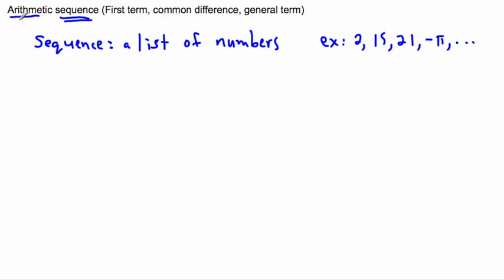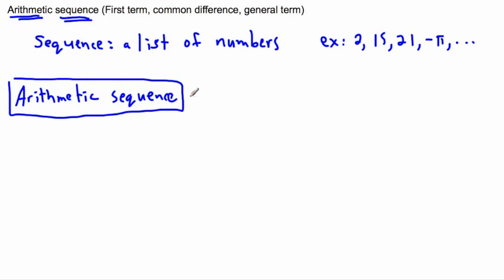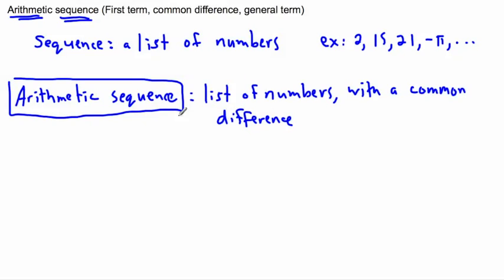Now what does it mean to be arithmetic? Well that's the key thing here. So an arithmetic sequence is a special kind of sequence. So an arithmetic sequence, what does that mean? Well it's a list of numbers because it's a sequence but there's something very special about it. So we're going to say that they have something in common. They have a common difference. So this is the key thing here with an arithmetic sequence. This is the key to doing them right here.